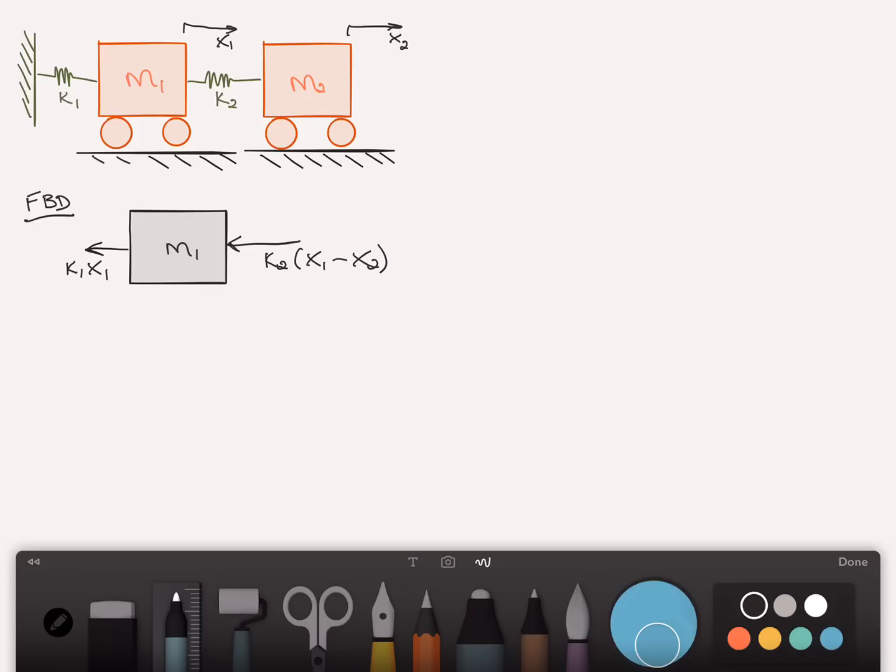Take a second to convince yourself that's right. Then by Newton's second law, MA, which in this case is M1 X1 double dot, is equal to the sum of the forces.